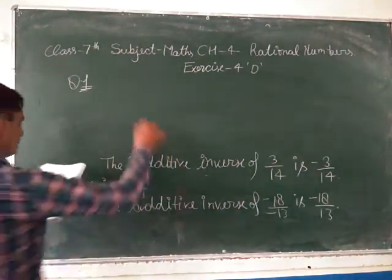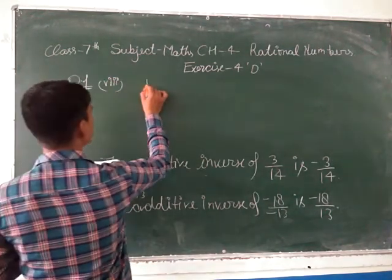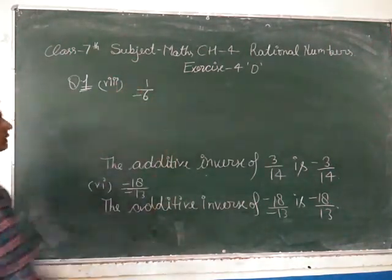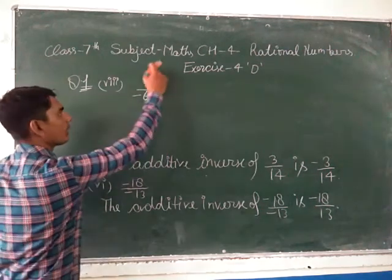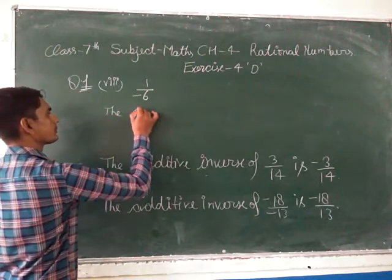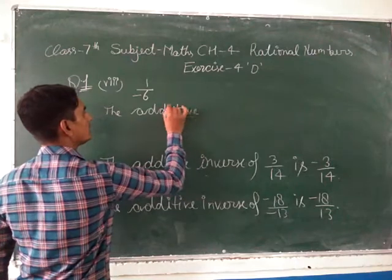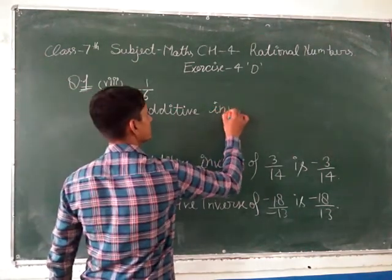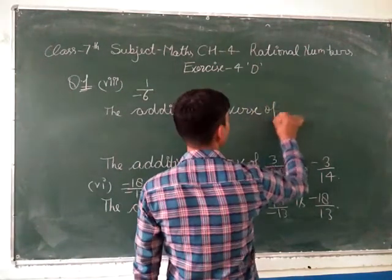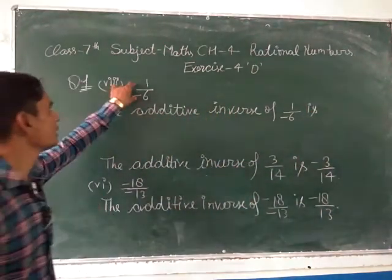The next part is the 8th part: 1 upon minus 6. This is a negative rational number. The additive inverse of 1 upon minus 6 is the additive inverse of a negative rational number.